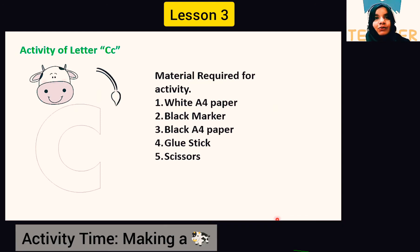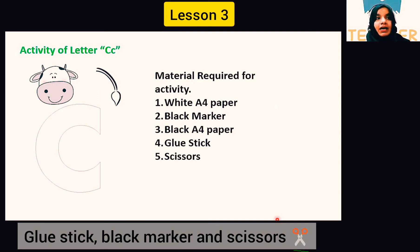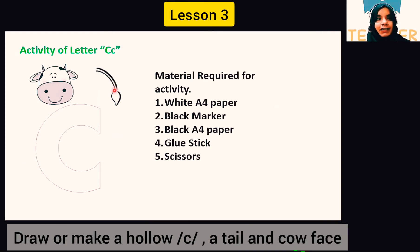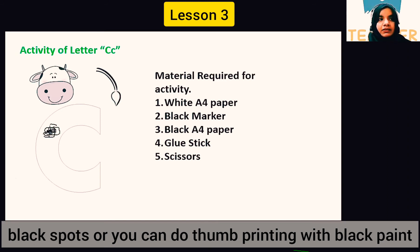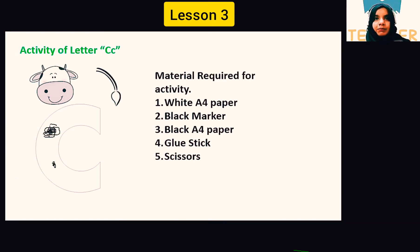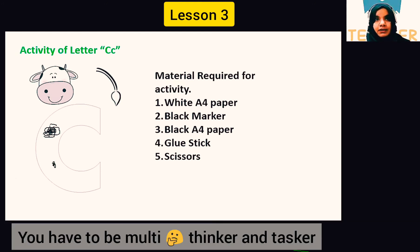Activity time — today we are going to make a cow with the letter C shape. It's very easy and simple. You can print or draw it. Things you need: white A4 paper, black marker, black A4 paper, glue, and scissors. Make a cow face, make a hollow C shape, make a tail, paste the face on the C, and paste the tail. Then you can do thumb printing or black color spots — that's your choice. Be a multi-thinker and multi-tasker as a parent or teacher.